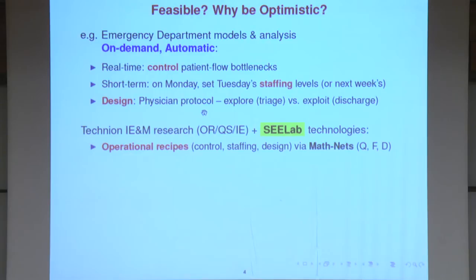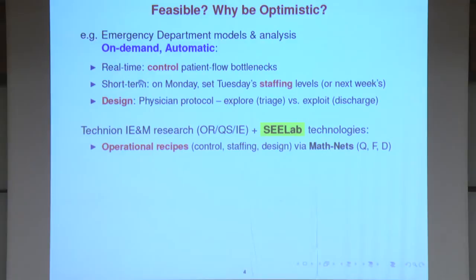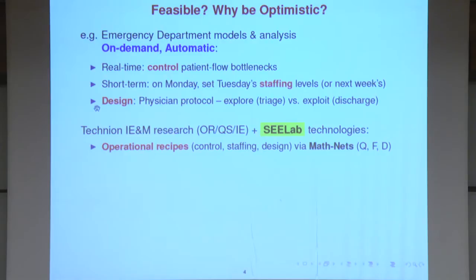I should be able to redesign the emergency department — for example, redesign the physician's protocol. There are two types of patients: those close to the entry door, about whom you don't know much, and those close to the exit door, about whom you know a lot and you want to free up space. When a doctor becomes idle, who should they pick? This is the classical trade-off between exploration and exploitation. I would like to design an algorithm that helps a doctor control patient flow within the emergency department.